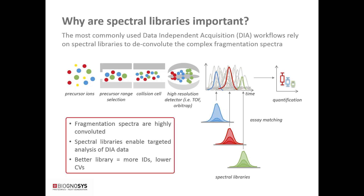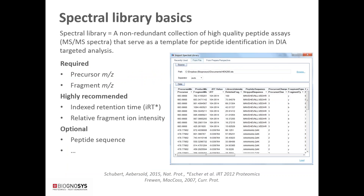The most commonly used DIA workflows rely on spectral libraries, and these spectral libraries are used to deconvolute the spectra that you get when you acquire in DIA mode. In a nutshell, a good spectral library means a higher number of IDs and lower CVs, so overall better results from your experiment.